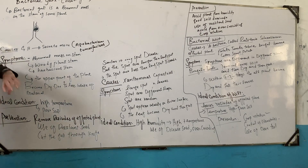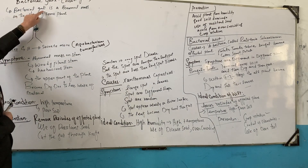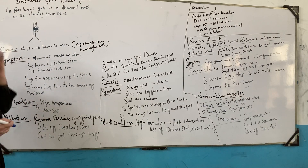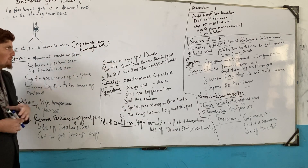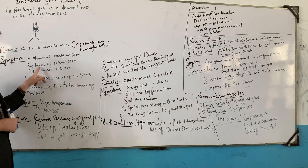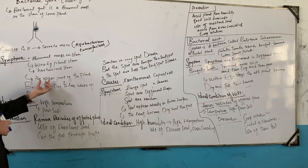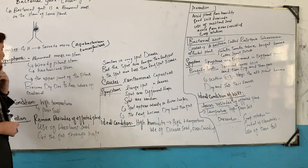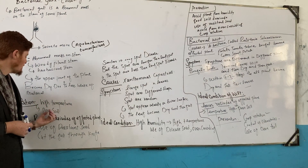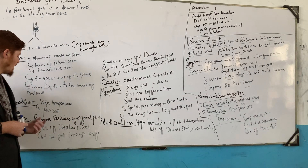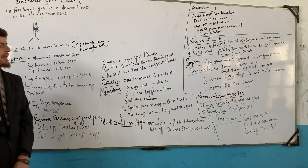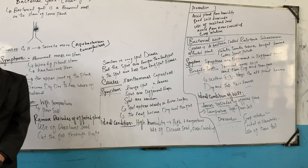The next one is bacterial gall management. Less intake of material causes the plant to go down. Ideal conditions include high temperature and poor soil. Remove reserves of affected plants, use resistant seeds, and cut the gall through a knife. Classic disease is bacterial salt. Rot disease is also related.